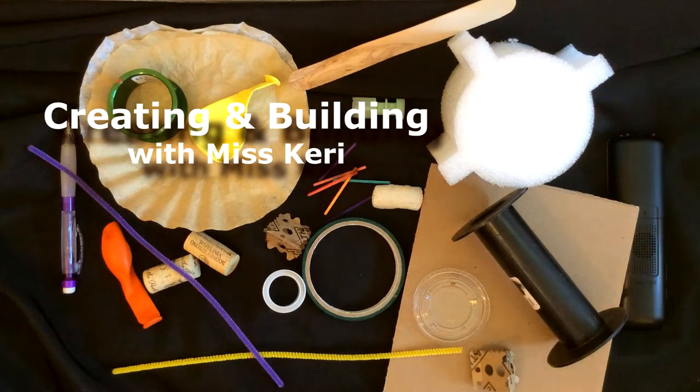Hi, this is Miss Carrie again, and I just finished reading Made by Maxine. It was a story about a little girl who loved to use everyday things that she found around her house, old items that she liked to transform into new things.